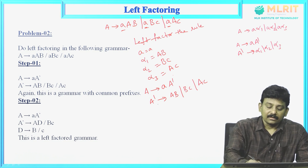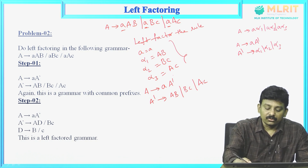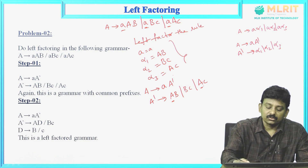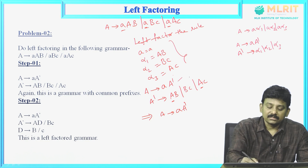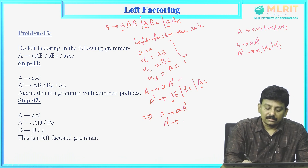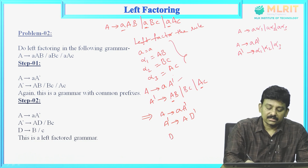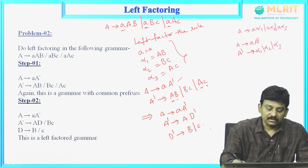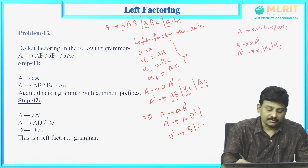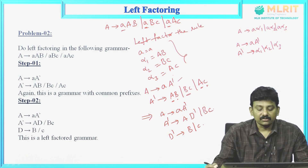But after the first step of left factoring, new rules are generated and those rules may still have common prefixes. Here, 'a' is a common prefix in the two rules A' derives ab and A' derives ac. So we need to perform left factoring again on those rules. A derives a-A' remains as it is; A' derives a-D' | bc, where D' is a new non-terminal. D' derives b | c. Like that, we can left factor the grammar.